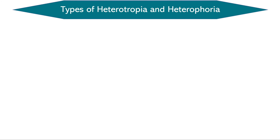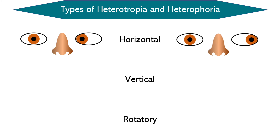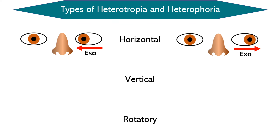The types of heterotropia and heterophoria are based on the direction of misalignment: horizontal, vertical, and rotatory. Horizontal deviation can be inward toward the nose or outward toward the temple. When the eye deviates inward it is called eso, and when it deviates outward it is called exo. Tropia or phoria is added as a suffix — for example, esotropia when manifesting and esophoria when latent, and similarly exotropia and exophoria.